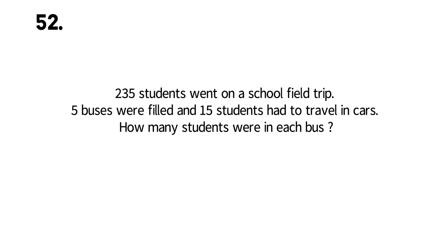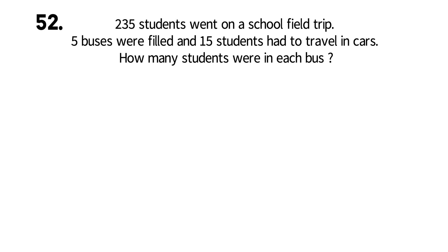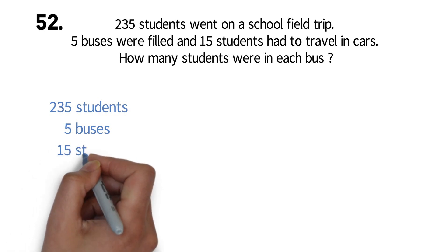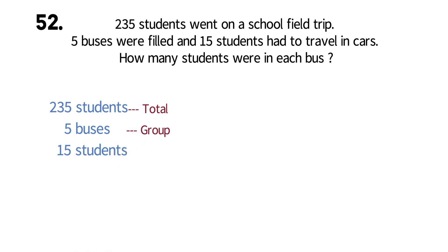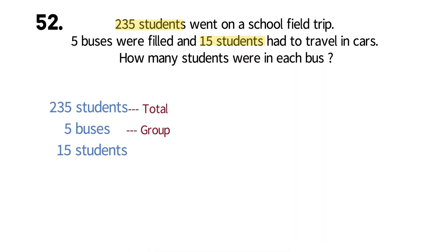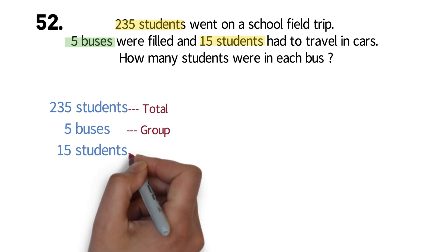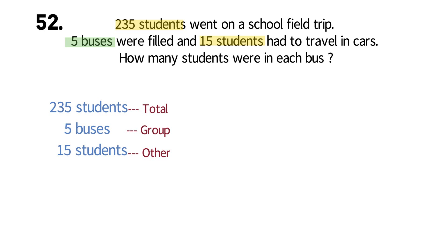Now let's look at question 52. 235 students went on a school field trip. Five buses were filled and 15 students had to travel in cars. How many students were in each bus? You can pause the video and try it. We have to identify our three parts. The three numbers we have are 235 students, 5 buses, and 15 students. I'm sure you can identify all the parts. The total is 235 students. The group is students and buses. We said another easy way to identify this is that the two numbers represent students, but the group number represents buses. The value that was not part of the group was 15 students. So we can write our equation as 5x plus 15 equals 235.